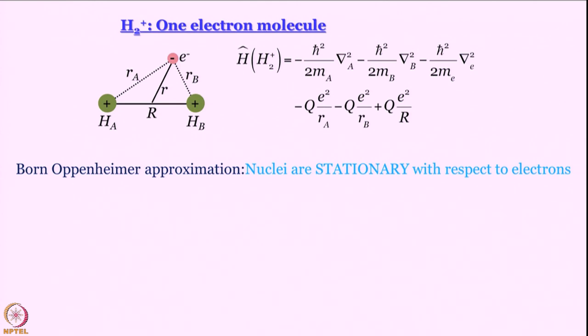This approximation says that these big fat nuclei cannot move as fast as this quick fast electron. Nuclei are stationary with respect to electrons. I have put it in a very watered down manner, but this is what it essentially means.